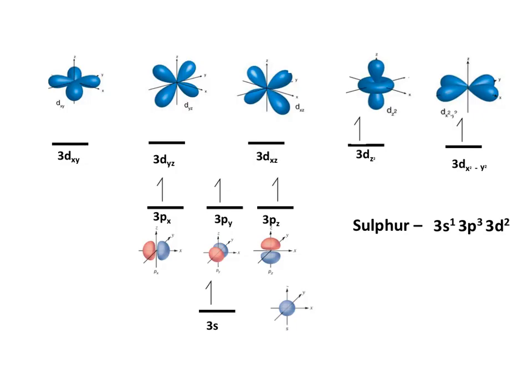Now the d-orbitals have four lobes each, and so are slightly more complicated than the p-orbitals, but the dxy, the dyz and the dxz, which are on the left-hand side along here, they all have their lobes in between the axes, and hopefully you can see that there.